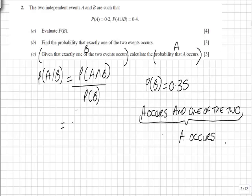So what we have is the probability of A over the probability of B. In the previous question, we calculated that A occurring by itself was 0.15. That was the probability of A and B complement.